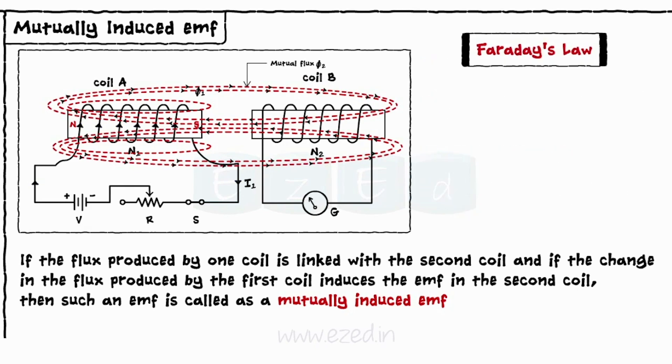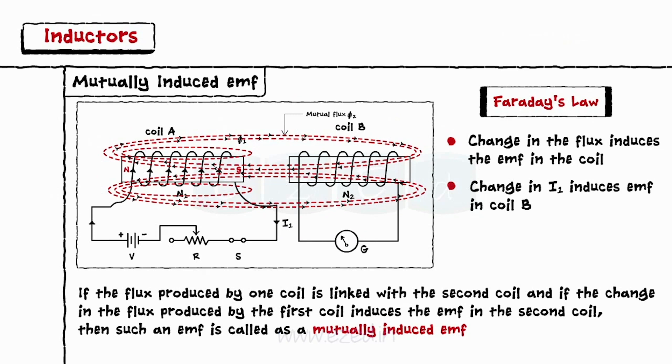According to Faraday's law, change in the flux induces the EMF in the coil. Thus, any change in current I1 induces the EMF in coil B. This phenomenon is called as mutually induced EMF.